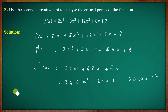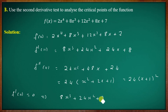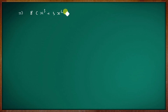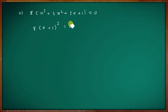Setting the first derivative equal to zero: f dash of x equal to 8x cube plus 24x square plus 24x plus 8 equal to 0. Dividing by 8 gives x cube plus 3x square plus 3x plus 1 equal to 0, which factors as x plus 1 all cubed equal to 0. This implies x equal to minus 1. So the critical point is x equal to minus 1.